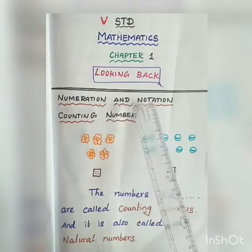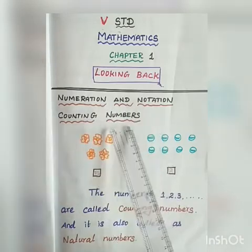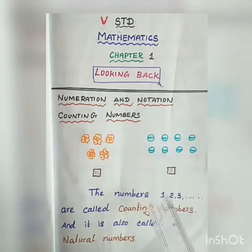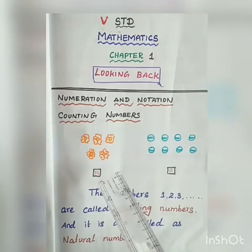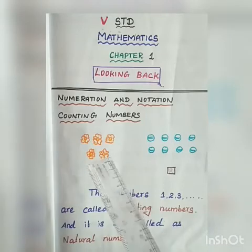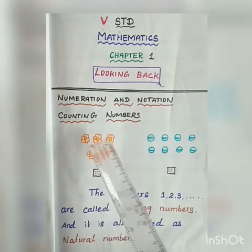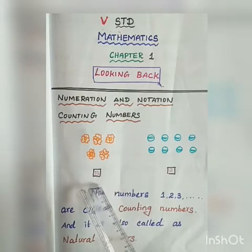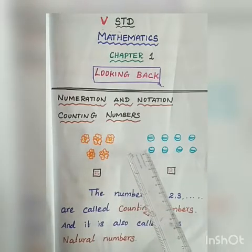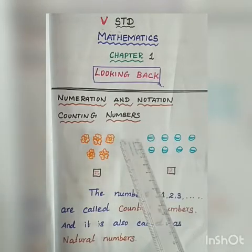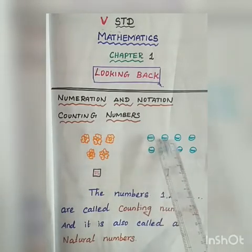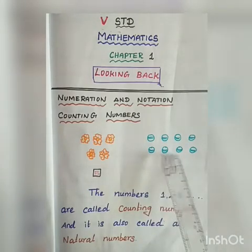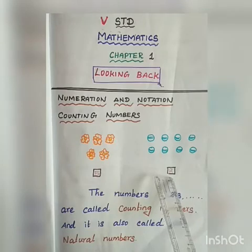Numeration and Notation — Counting Numbers. Here you have some flowers and some balls. Now you want to count the number of flowers: 1, 2, 3, 4, 5. So you put 5 in this box. Next you have to count the number of balls: 1, 2, 3, 4, 5, 6, 7, 8. So you put 8 in this box.